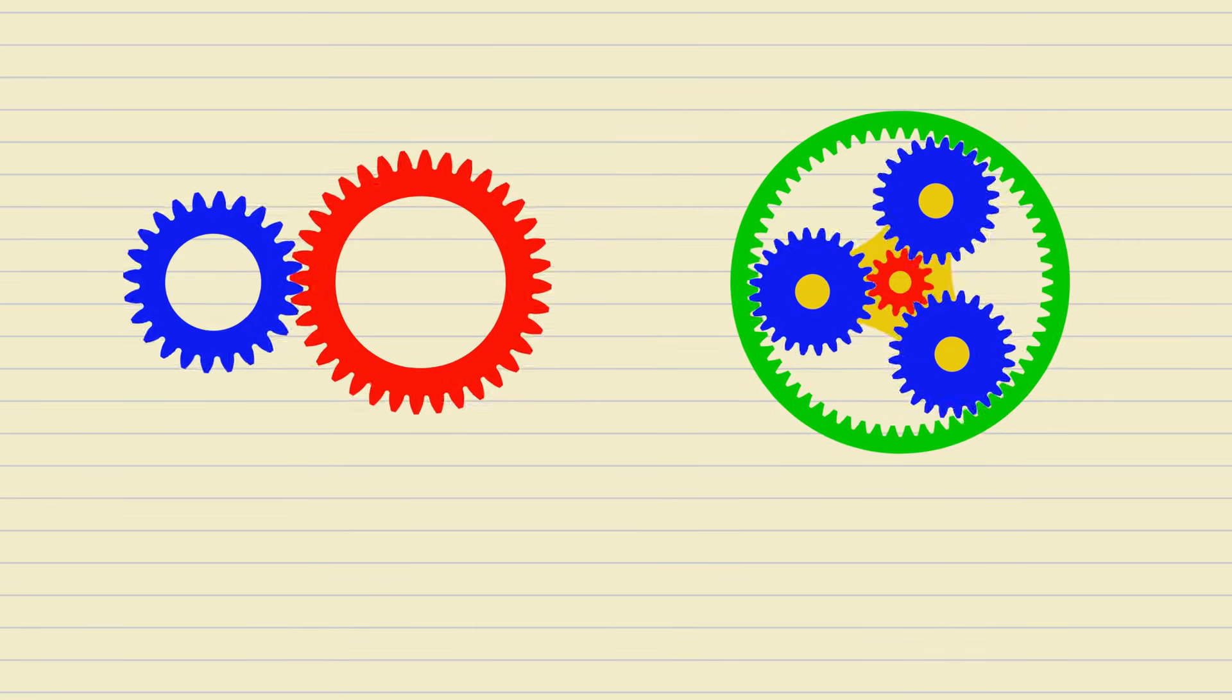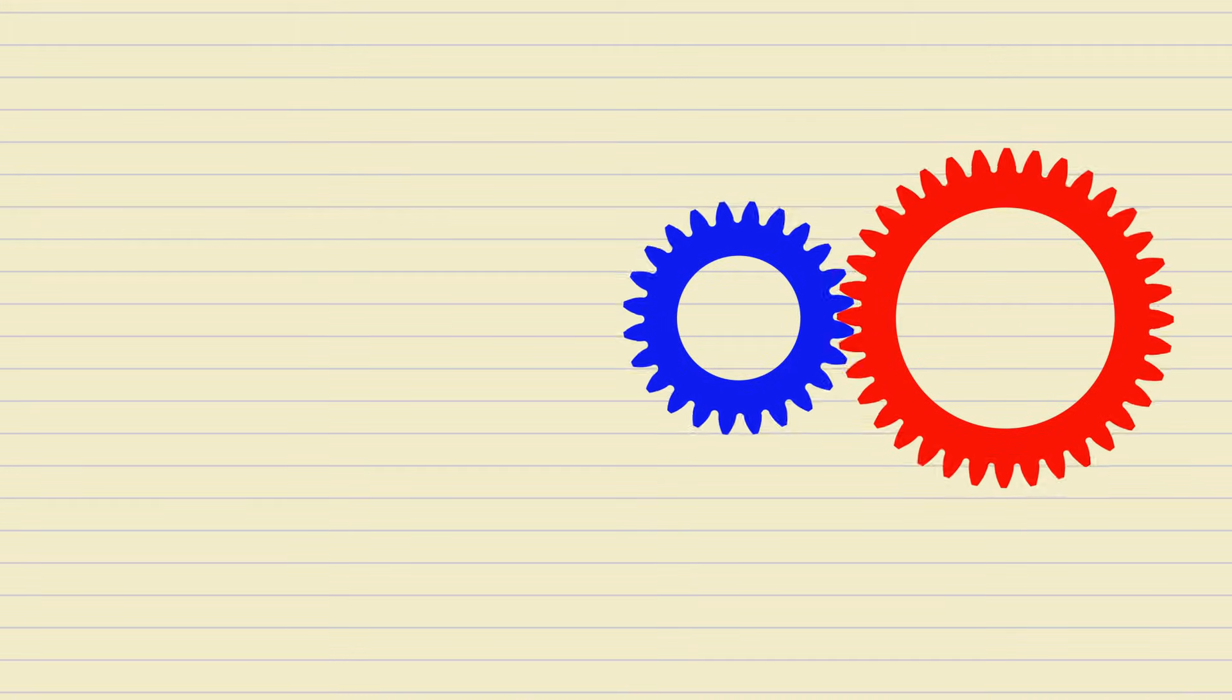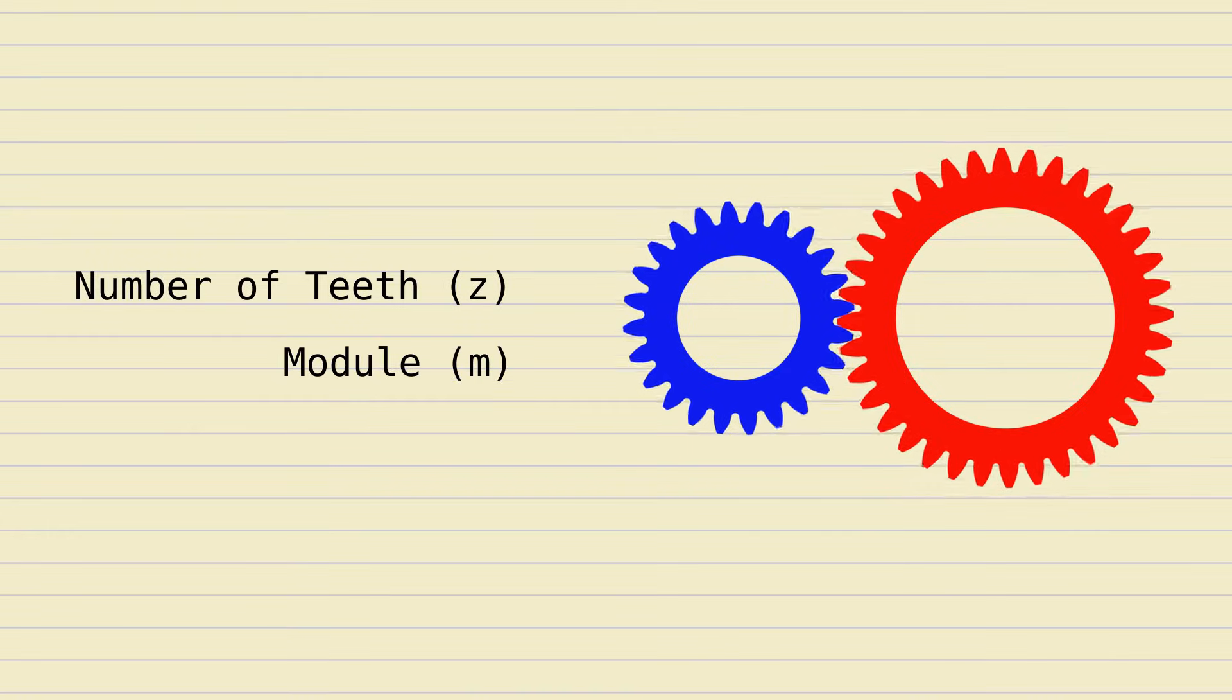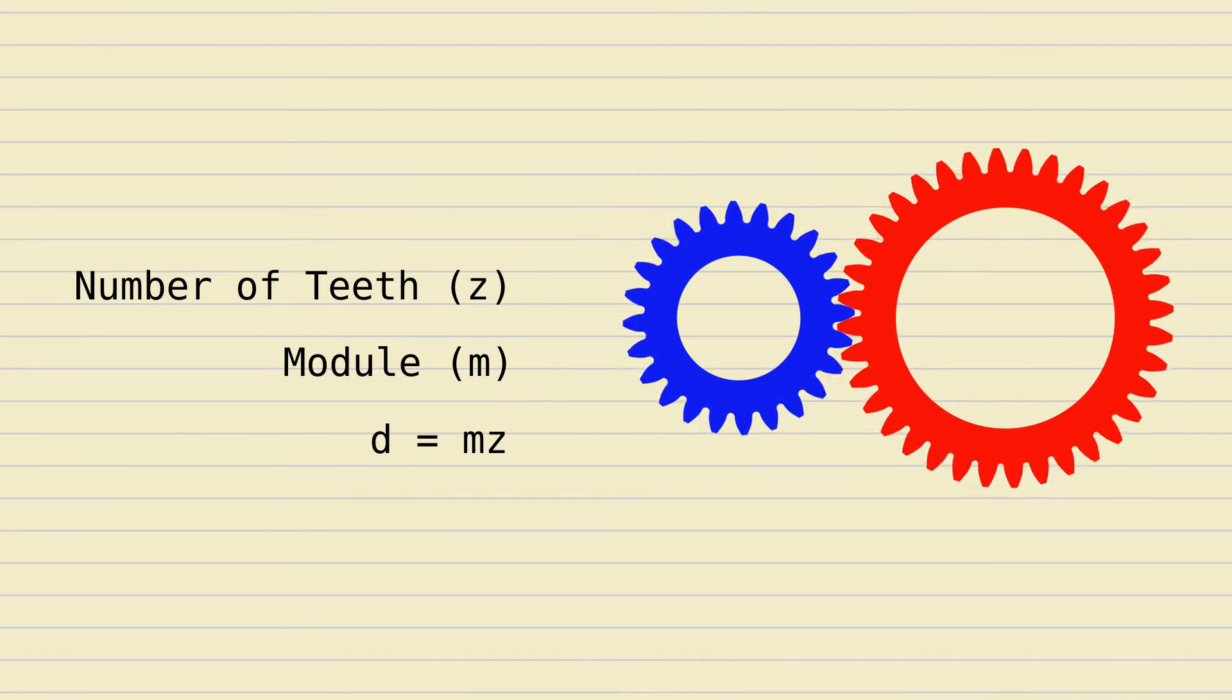First, let's go over a few basic facts about meshing gears. A gear is fully defined by as few as two parameters, the number of teeth, and a number called module, which is a unit of size that determines how big or small the gear is. The gear's diameter is simply the number of teeth times the module.